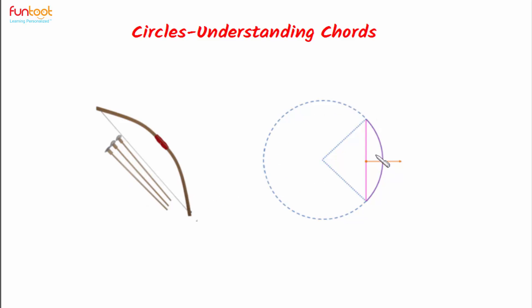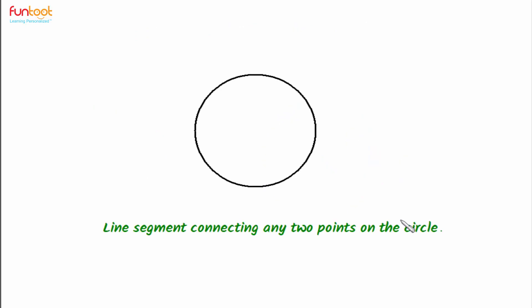Here we have shown this bow and arrow with the help of a schematic diagram. So this part here is the bow which is part of a circle, and the pink line here is the string, and this is the arrow. So the pink line here which represents the string is an example of chord in real life.